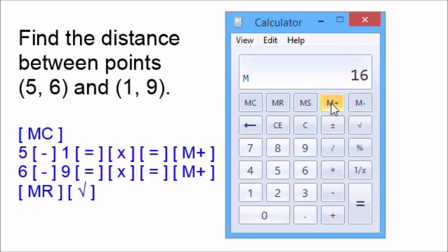Then we go six minus nine equals, to square this times equals, memory plus. Then memory recall, hit the square root button, and we'll find the distance between five, six, and one, nine is five.